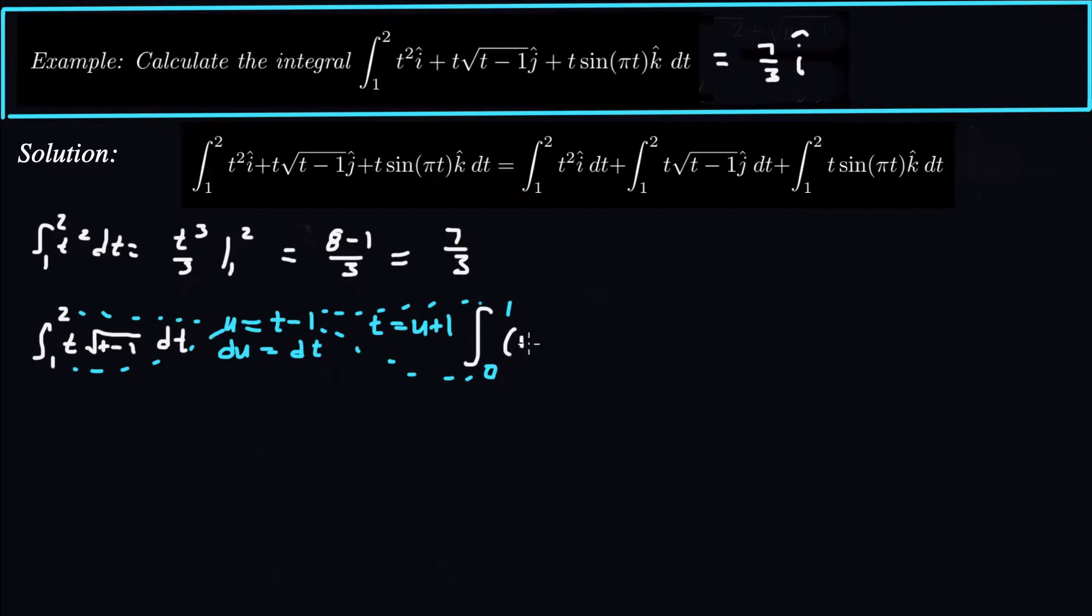This is going to be u plus 1 and then square root of u. I could just write that as u to the 1 half, which is actually preferred in this case. So this is the integral from 0 to 1 of u to the 3 halves plus u to the 1 half du. Integrating those two pieces is not too bad. Just add 1 to the power, get 5 halves, multiply out front by 2 fifths, and the same thing here. Do 3 halves, 2 thirds.